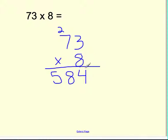And there aren't any other numbers to multiply. So when you look at it, 73 times 8 is 584. Let's do another one.